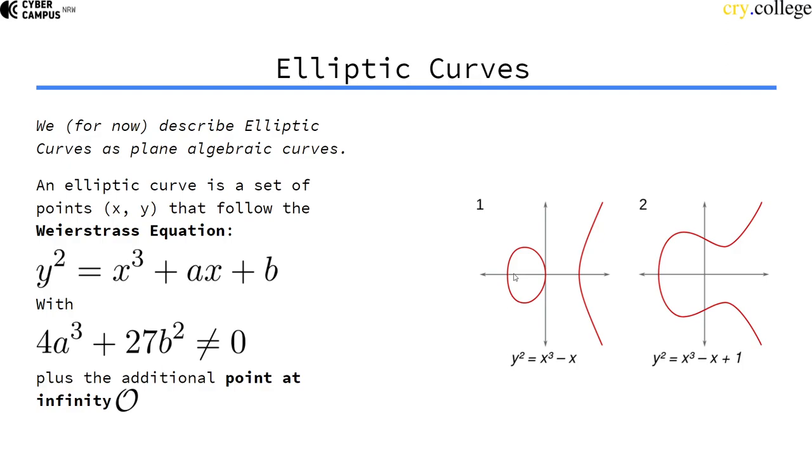So if we plot those curves here, for example, we have a parameter A of minus one and B of zero. It looks like that. This is the x-axis, this is the y-axis. Here's another curve. So if we plot them over the real numbers, they look somewhat like this.